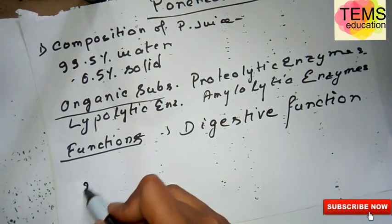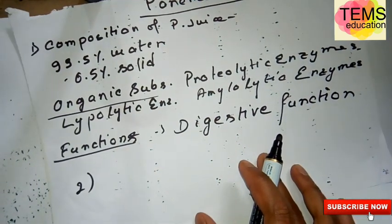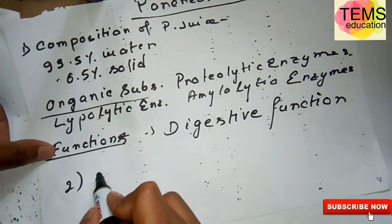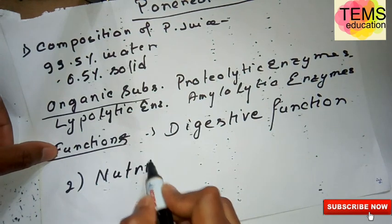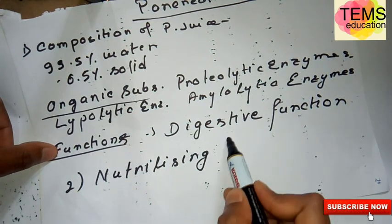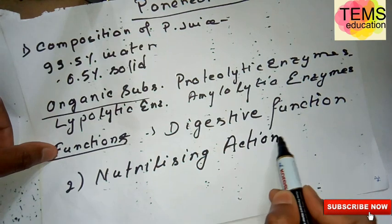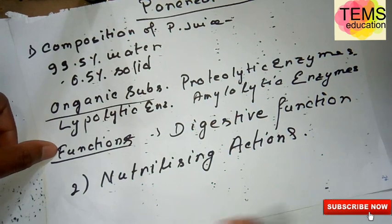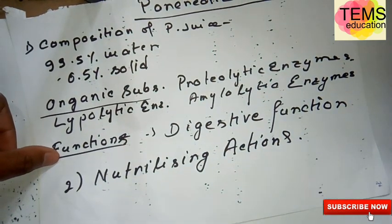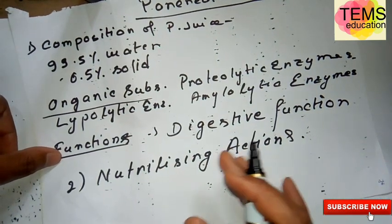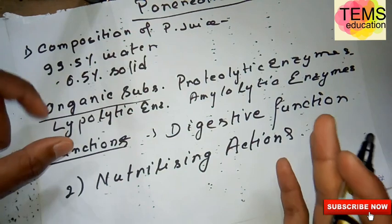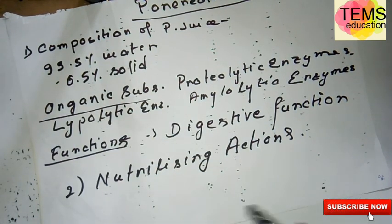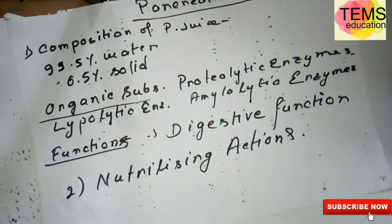The second function is the neutralizing function. When acid chyme enters into the intestine from the stomach, the pancreatic juice with a large quantity of bicarbonate ion is released into the intestine. Due to the presence of large amount of bicarbonate ion, the pancreatic juice neutralizes the acidity of the chyme in the intestine.